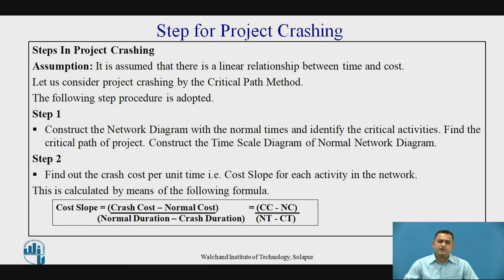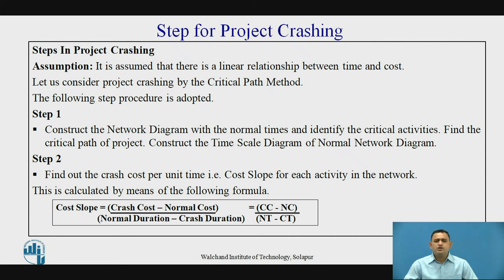Now let's see the steps involved in crashing of the project. The overall crashing is carried out with the help of the critical path method, in which all the earliest starting times are assumed for determining the project duration and critical path. Step 1: once we know the overall project, construct the normal network diagram — that is the AOA network diagram — with the earliest starting times, to determine the critical path. With that critical path, we then construct the time scale diagram, which is a representation of the normal network diagram drawn to scale.